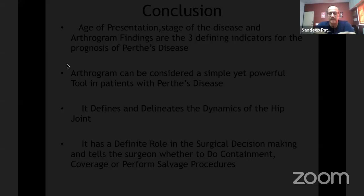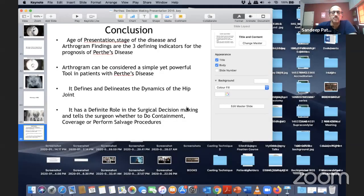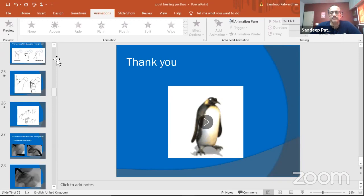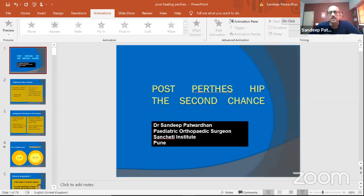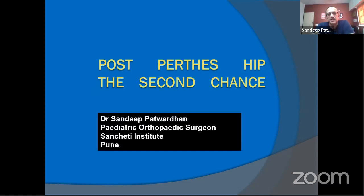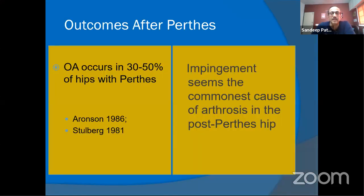Thank you — that was very nice and you managed to show the surgery as well. We'll move on to the next talk. The second chance: what happens when the hip is either not containable or has healed? Do we give up and say nothing can be done? Let's understand what happens after Perthes heals.